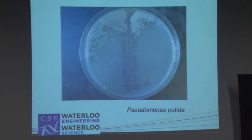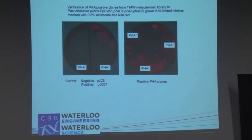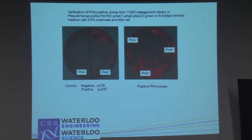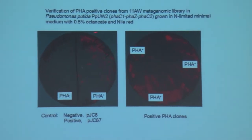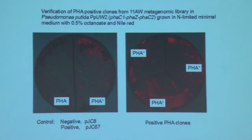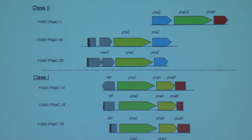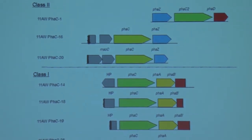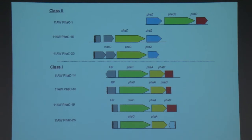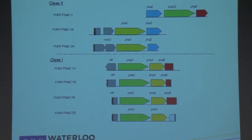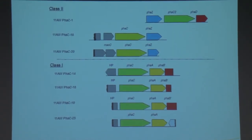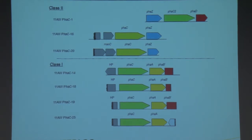We can also do this selection in Pseudomonas putida, which has wider substrate specificity, using a fluorescent screening method to identify positive clones. This allows isolation of both class II PHA synthases, which accept a large diversity of substrates to make novel bioplastics, and the more common class I synthases.